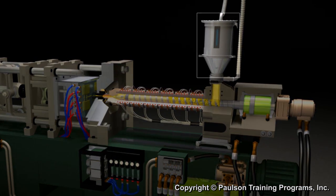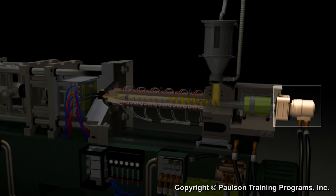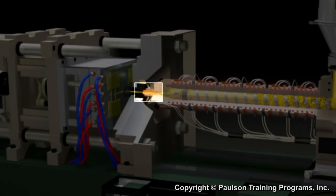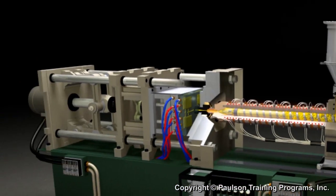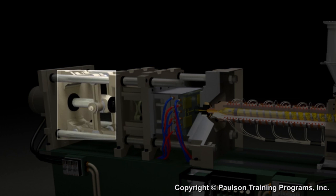Again, this is the hopper, the hydraulic injection cylinder, the screw drive motor, the barrel, the nozzle, the platens, the mold, and the clamp.